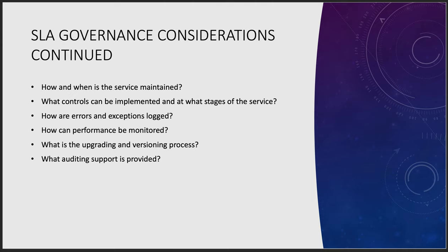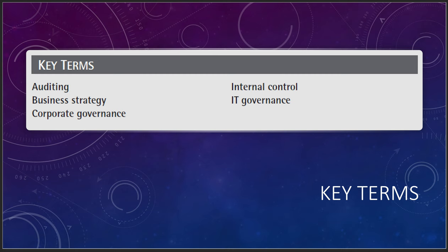When you get into governance and compliance, it really is a board and C-suite senior staff driven exercise — everything flows downhill from strategic to tactical, from here's the idea to here's how I'm going to implement it. That is the fun part of the job — taking an idea and actually converting it into a viable application and viable service for your internal or external customers. Key terms to know: auditing, business strategy, corporate governance, internal control, and IT governance. Thank you for sitting through this lecture — I'll see you in the next one.